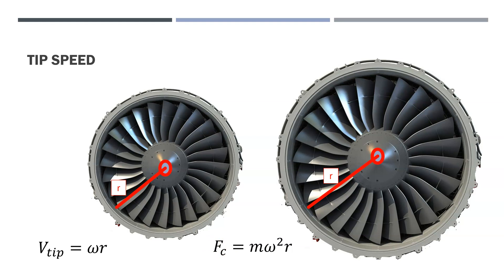So these were two of the restrictions on the bypass ratio. The tip speed would get to the speed of sound quicker, and there would be significant centrifugal force.